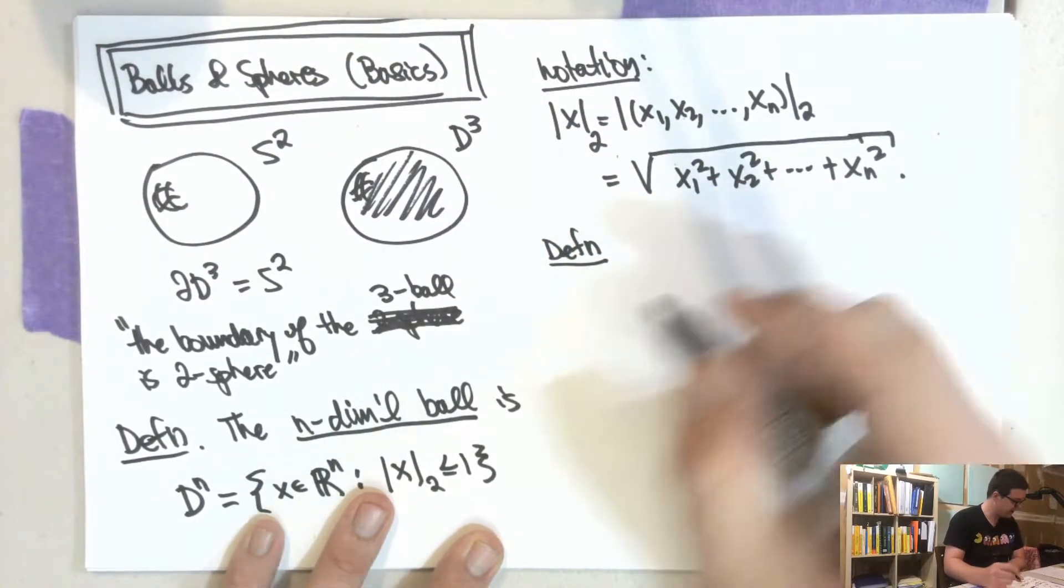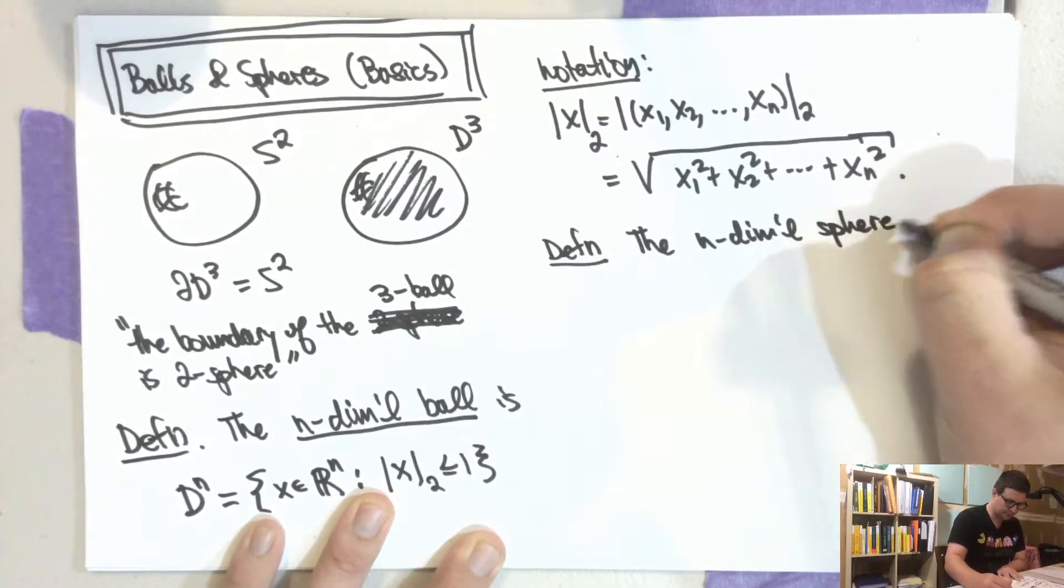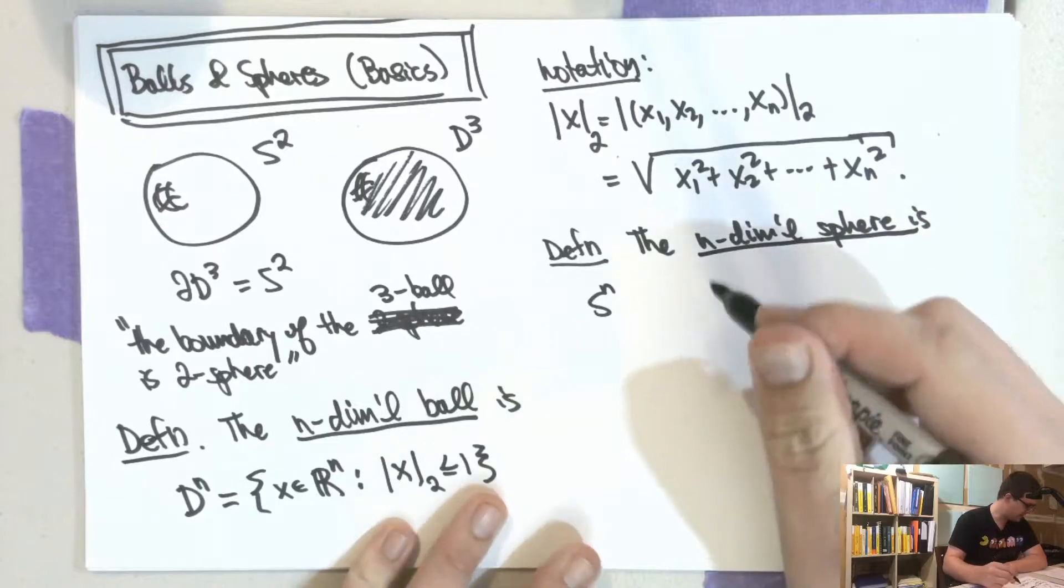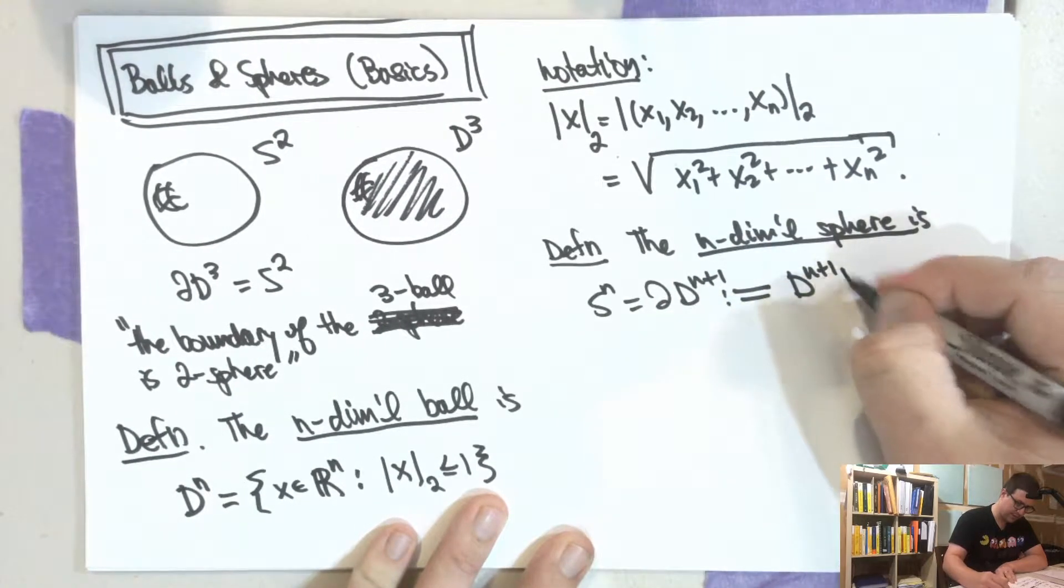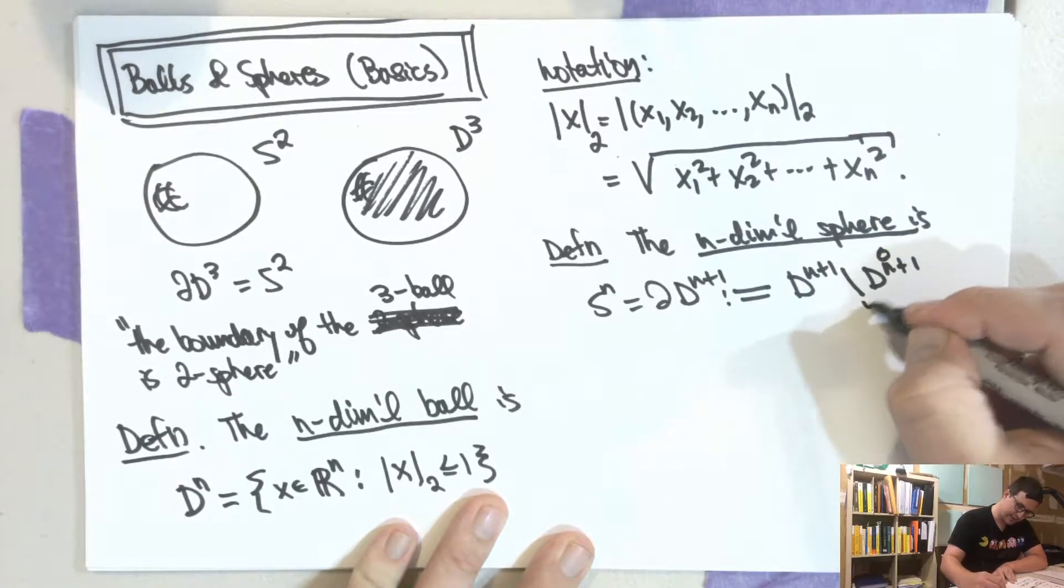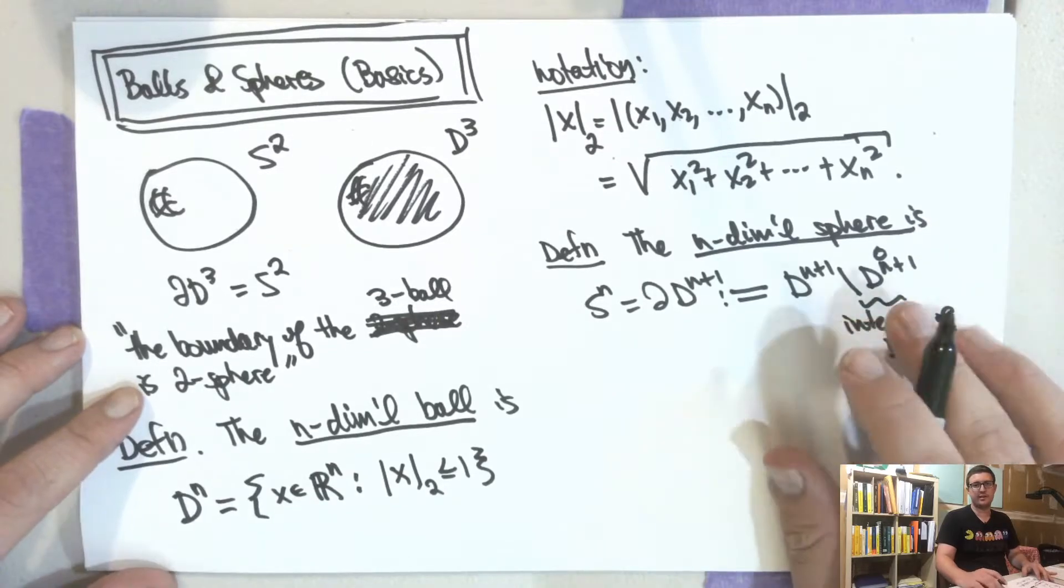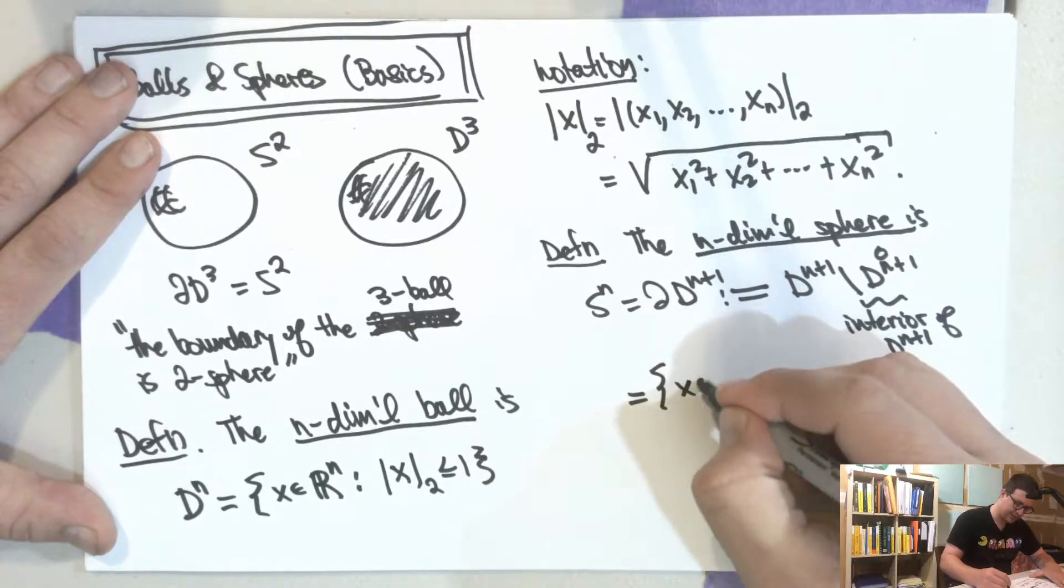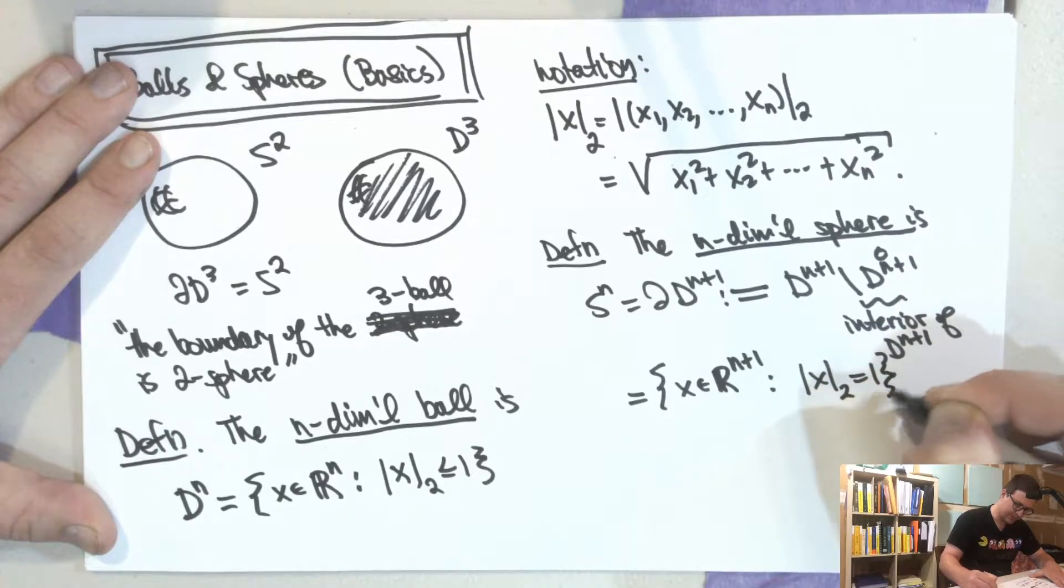So this is our first definition. So the other definition is that the n-dimensional sphere is this, this is Sⁿ. So this is the boundary of Dⁿ⁺¹, which is defined to be equal to the Dⁿ⁺¹ minus the interior of Dⁿ⁺¹. This thing is also equal to the set of x in ℝⁿ⁺¹ such that the norm of x is equal to 1.